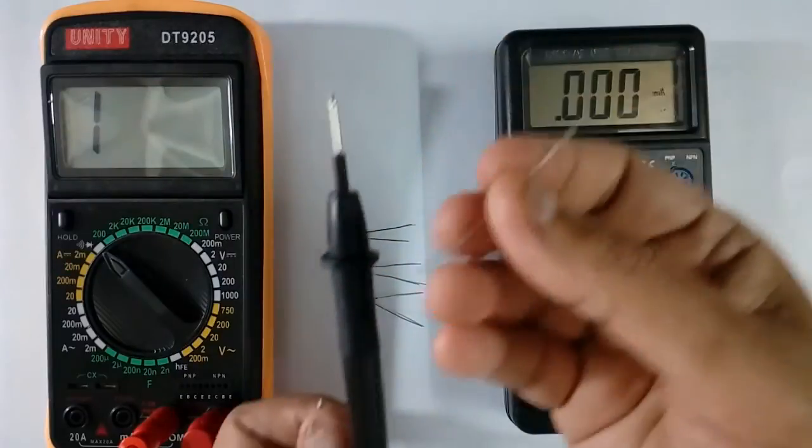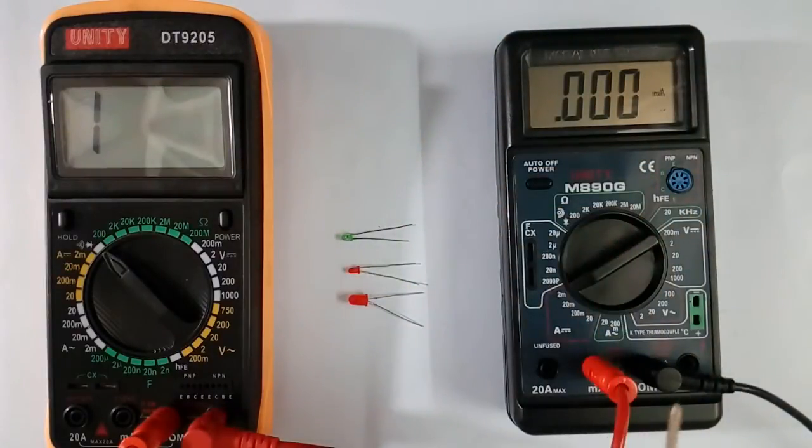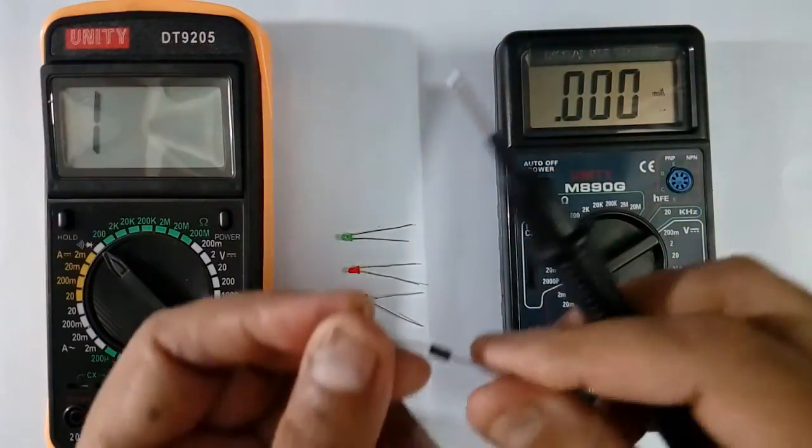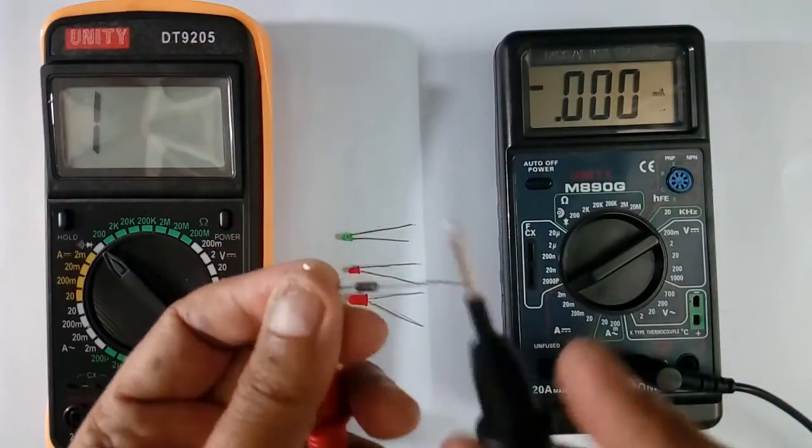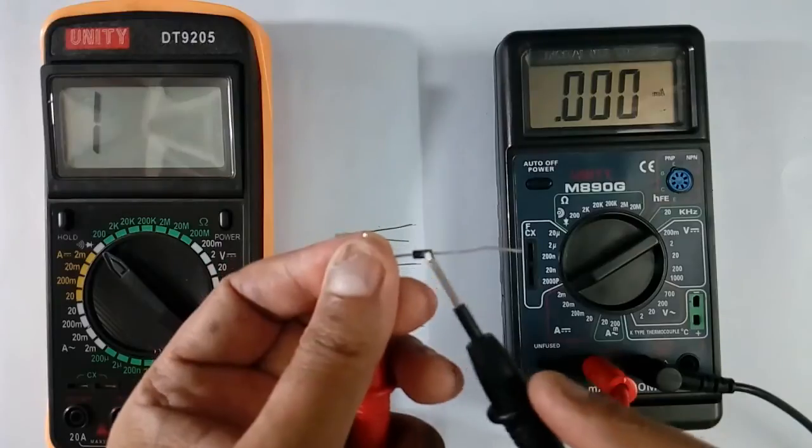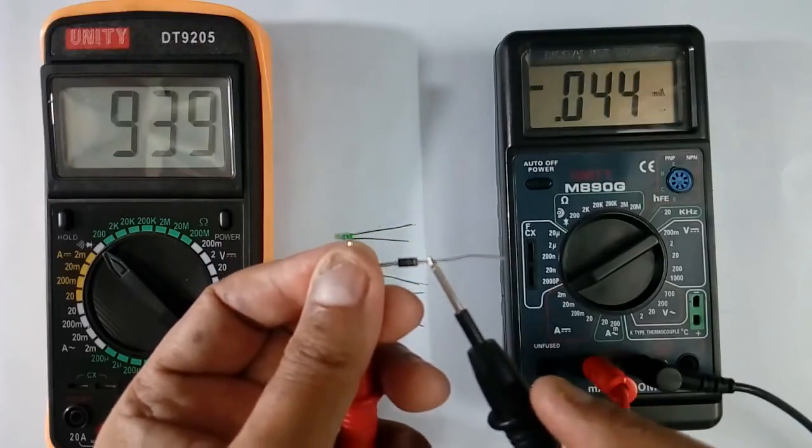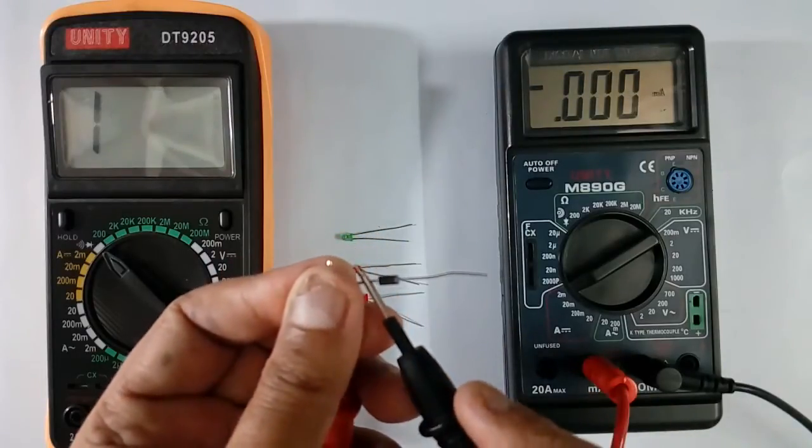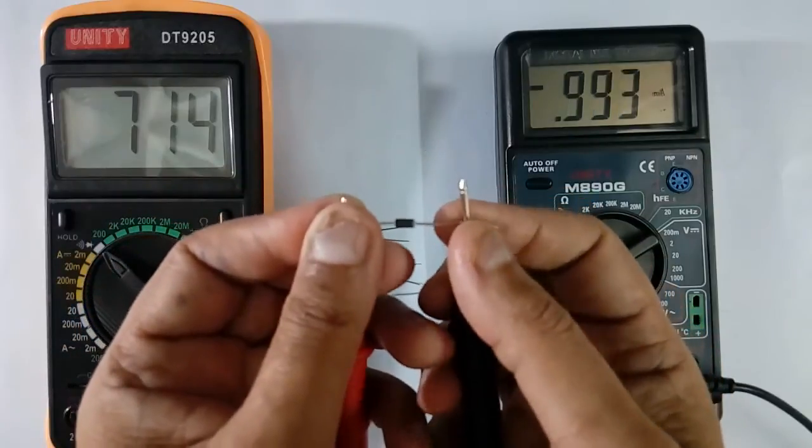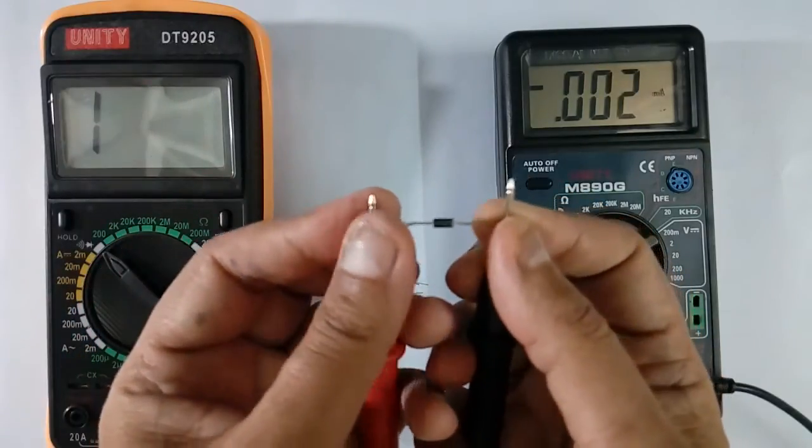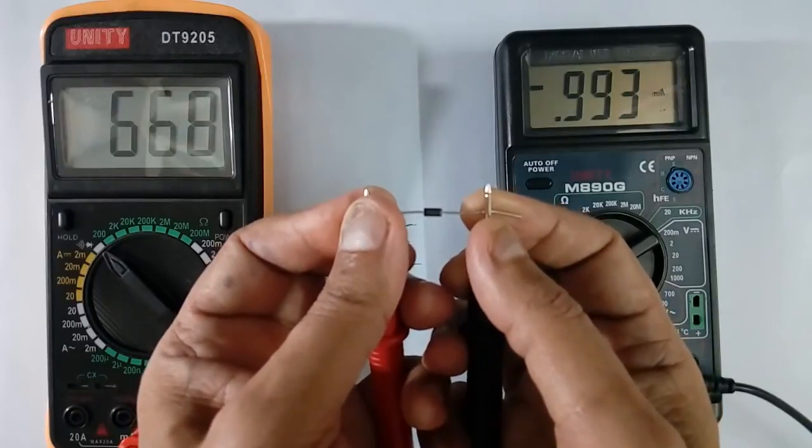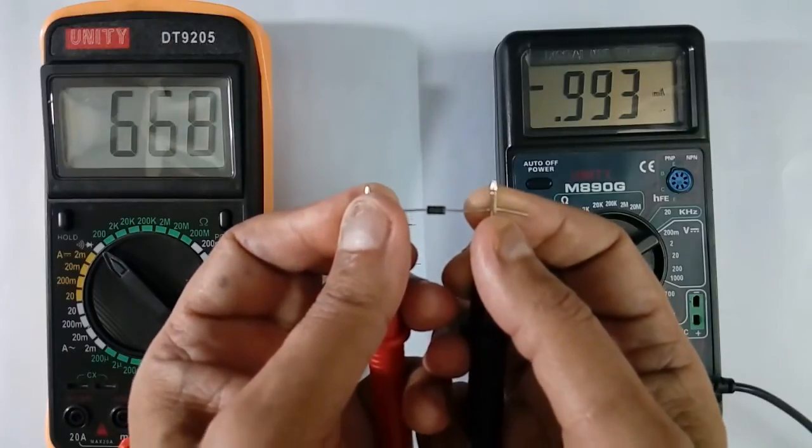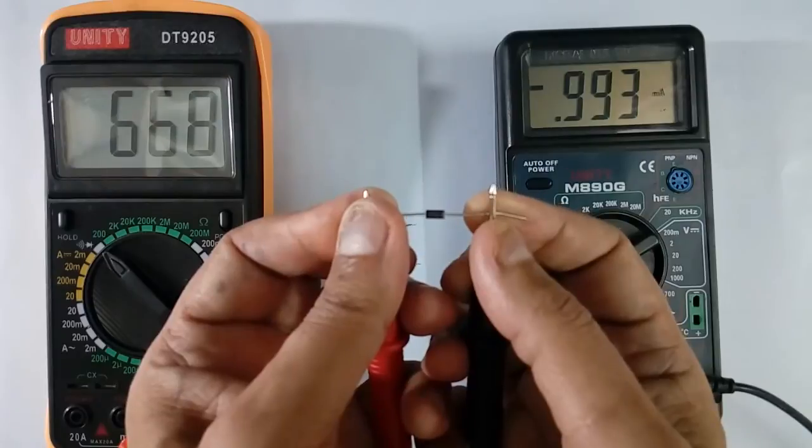Now I will take another diode. This is IN4007, used in rectifier. It has a ring here wide. This side that is cathode. And this side is anode. So anode is connected to positive. The drop is 668 millivolt at current of 0.99 mA.